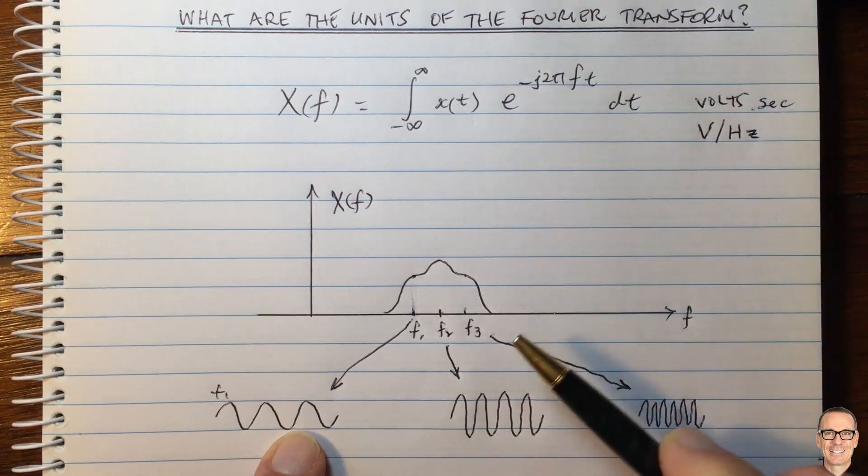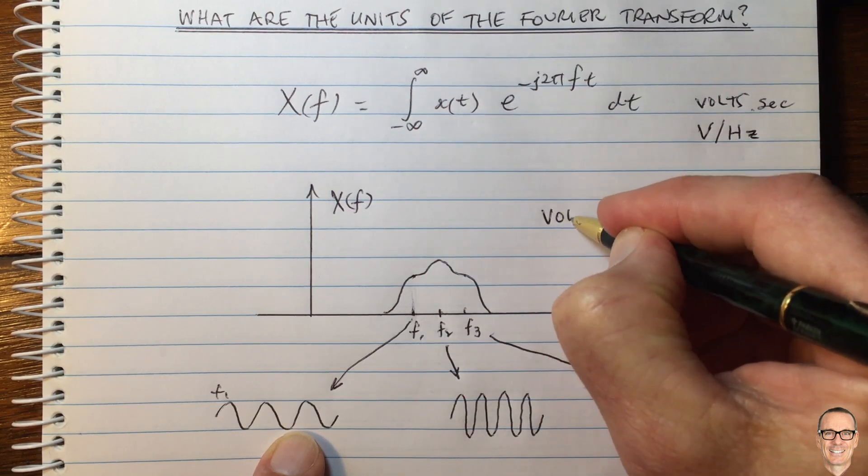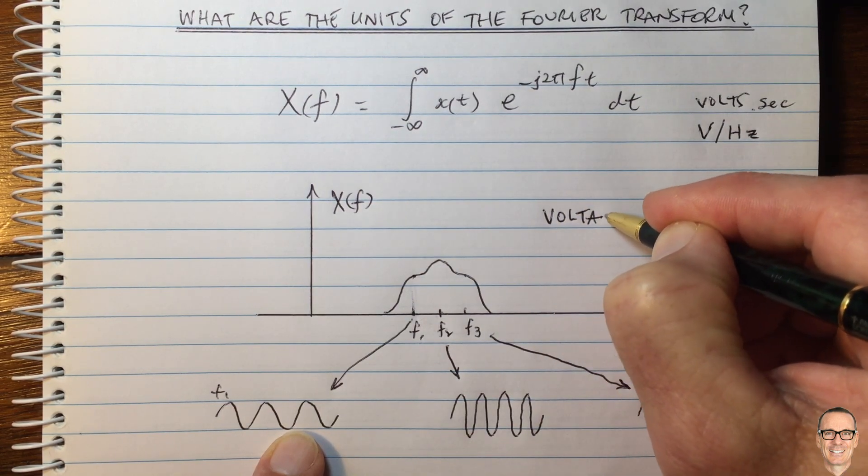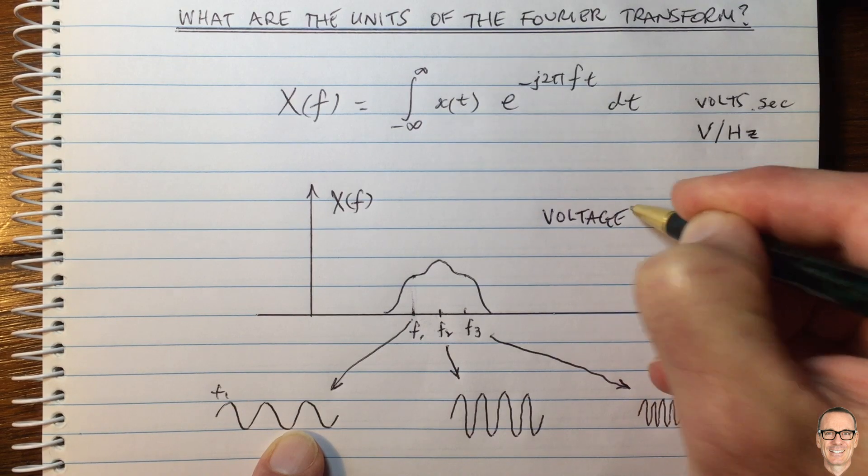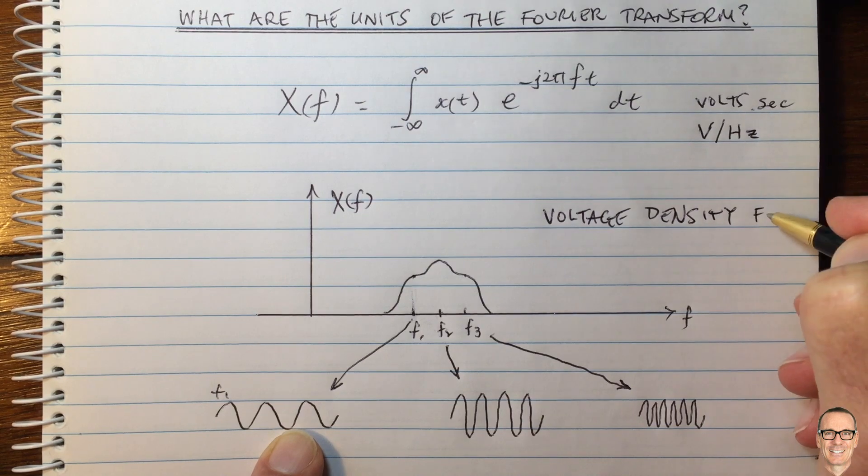It's only when you add it up over a particular frequency range that you actually get a voltage. And that's why the Fourier transform is a density function. It is a voltage density function, and that's important when we're thinking about the Fourier transform.